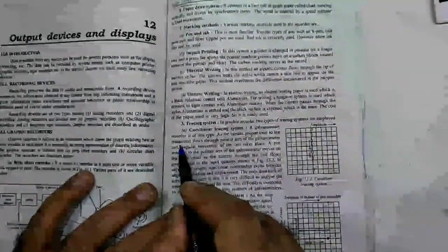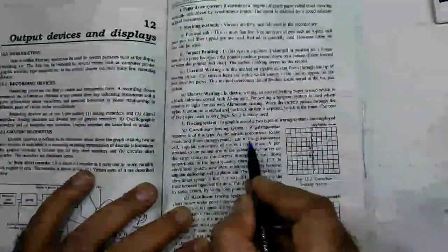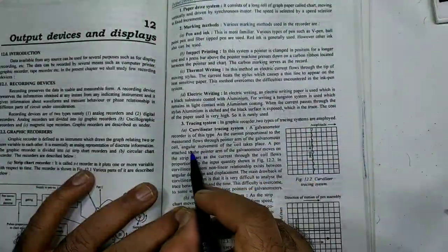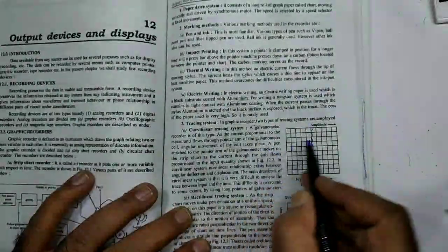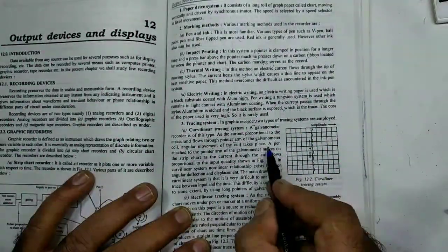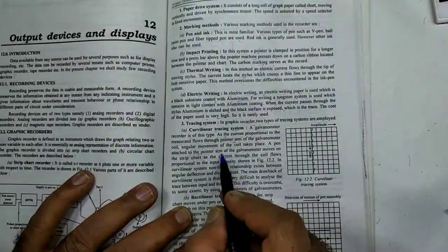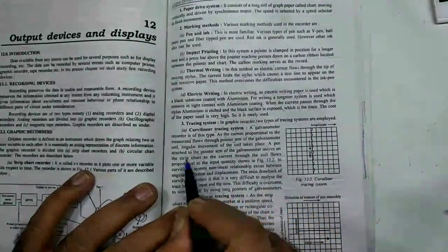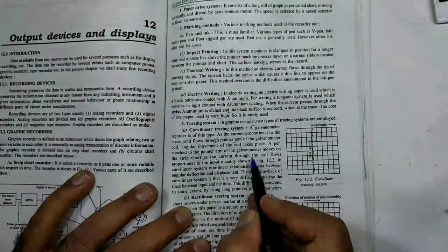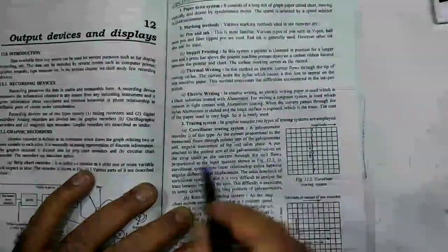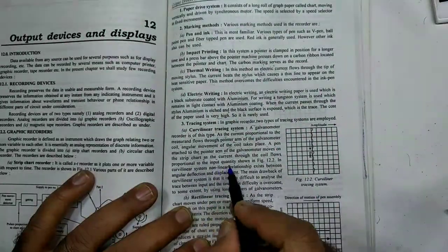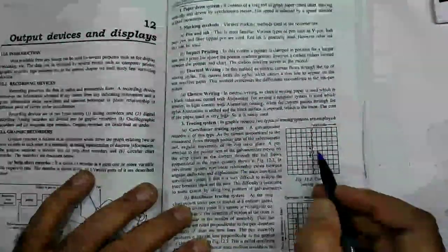As the current proportional to the measurand flows through the pointer arm of the galvanometer coil, angular movement of the coil takes place. Angular movement takes place and a pen attached to the pointer arm of the galvanometer moves on the strip chart as the current through the coil flows proportional to the input quantity shown in the figure.